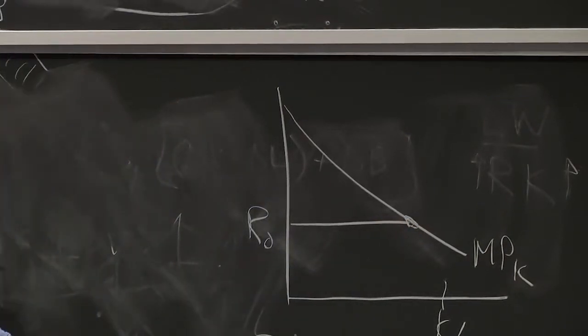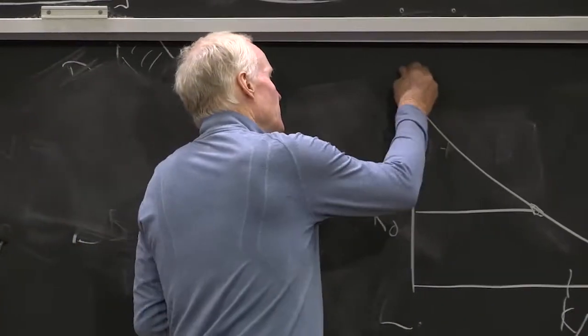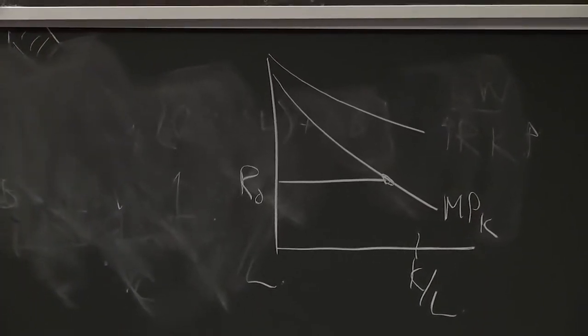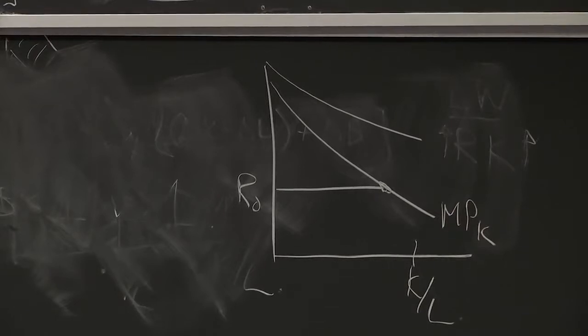If you had technological progress that was really biased for capital, what would it look like? Well, it might look like this. That would be technological progress that would be really biased for capital. Anybody see why?